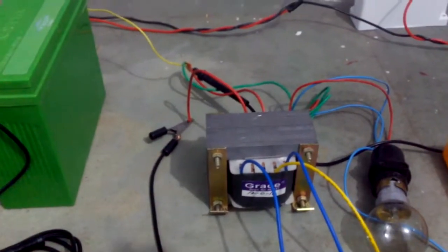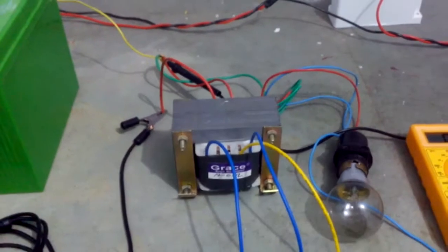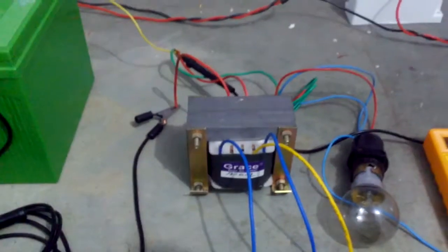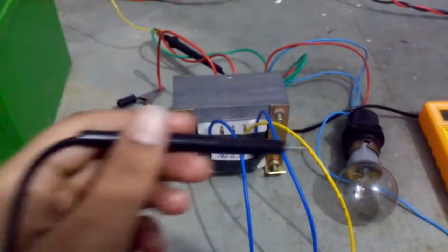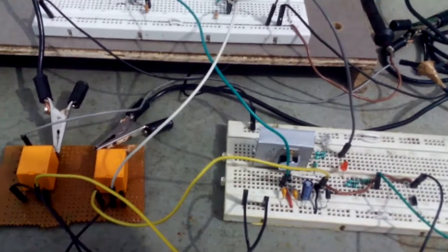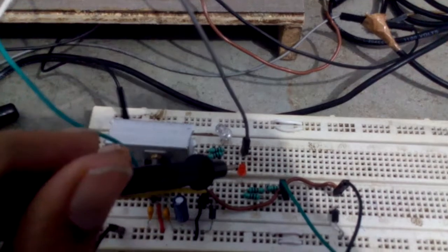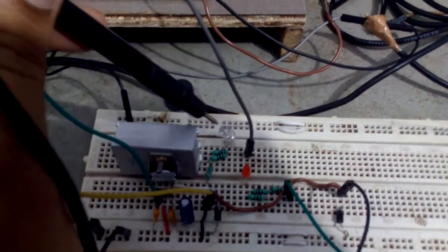When mains is present, this bulb is connected with AC mains, and in case of shutdown of main supply, it is then switched to inverter. Here is a switching circuit with two relays and this 7812 IC. We have used this red LED for indication of inverter mode and blue one for the mains supply.